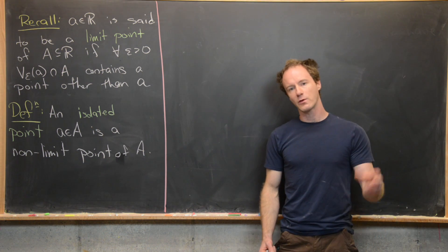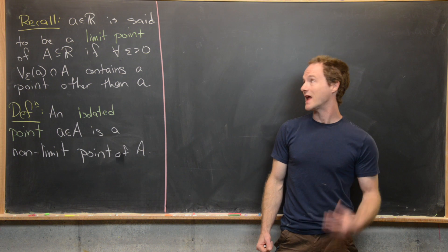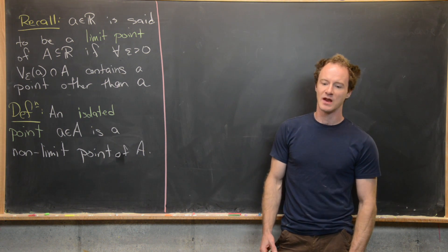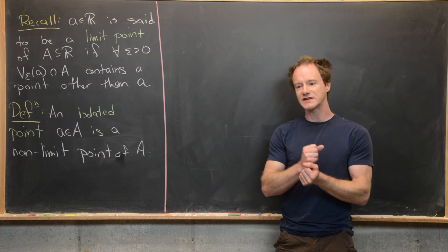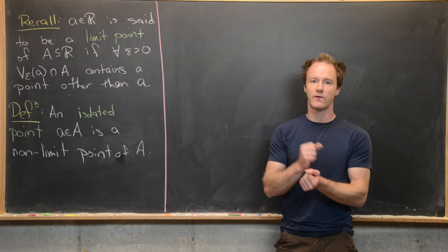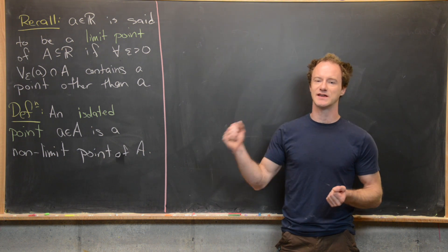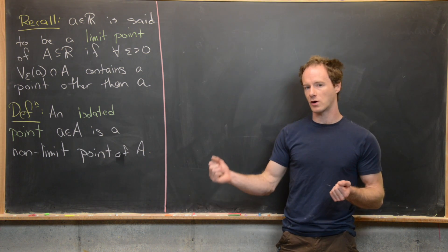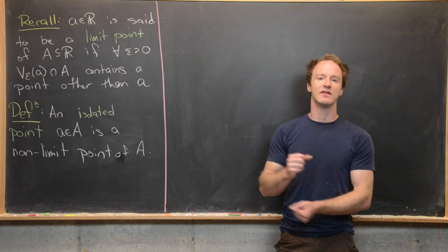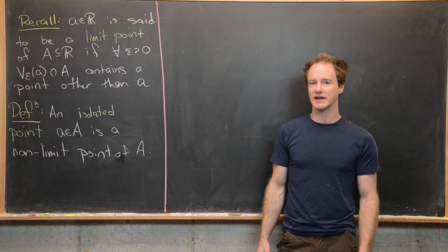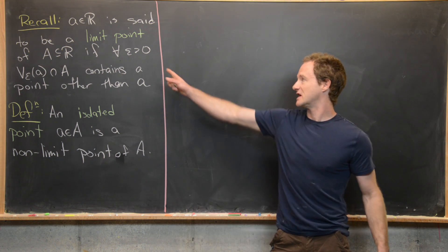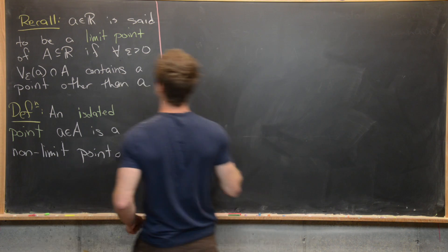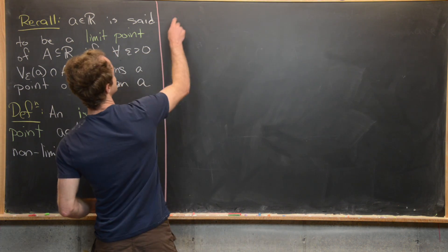Before we negate, let's recall how to negate a quantified statement. The quantifiers will change: for alls turn into there exists, and there exists turn into for alls, and then the conclusion will negate. That's exactly what we want to do for this statement, so let's go ahead and do that.